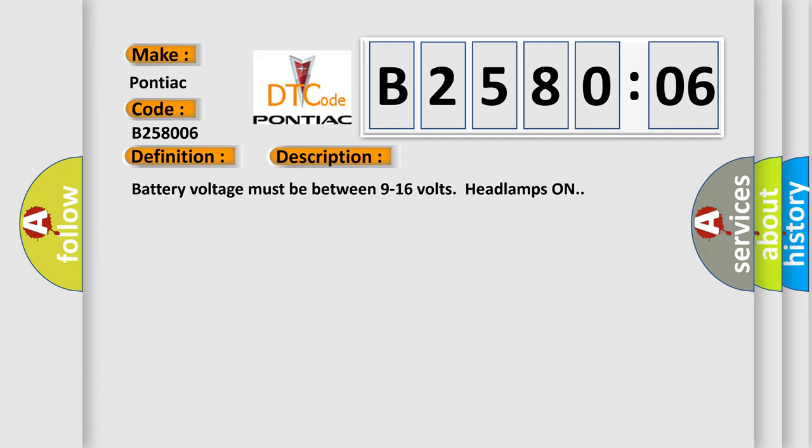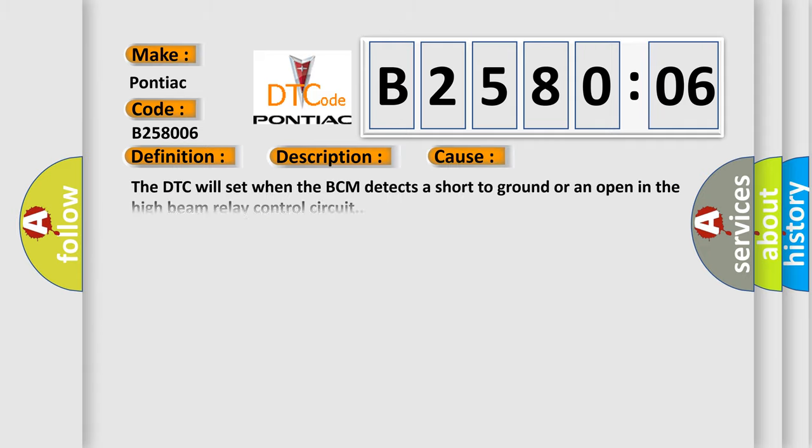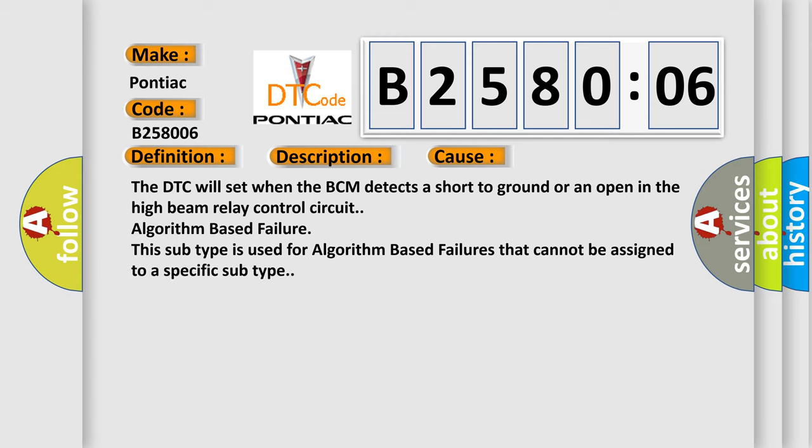This diagnostic error occurs most often in these cases. The DTC will set when the BCM detects a short to ground or an open in the high beam relay control circuit algorithm based failure.